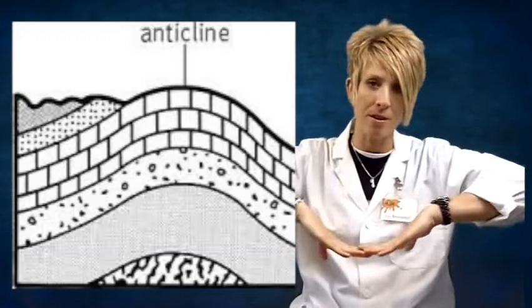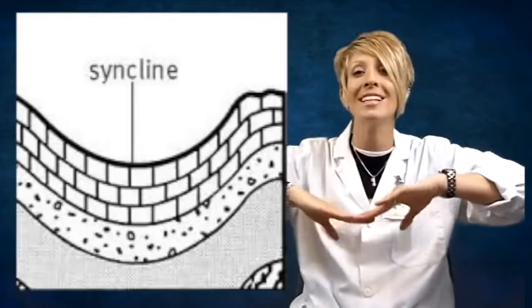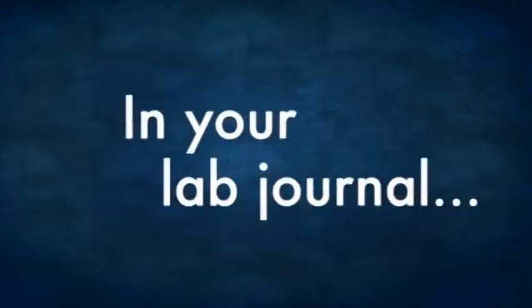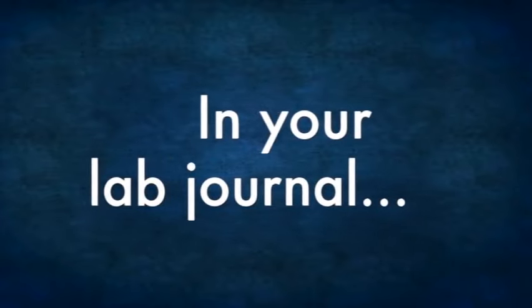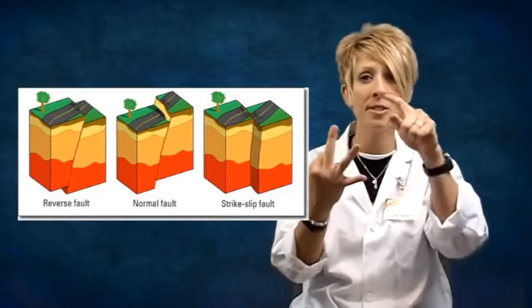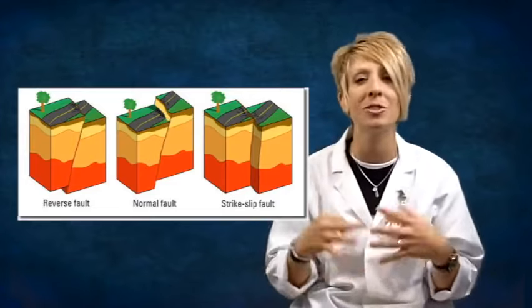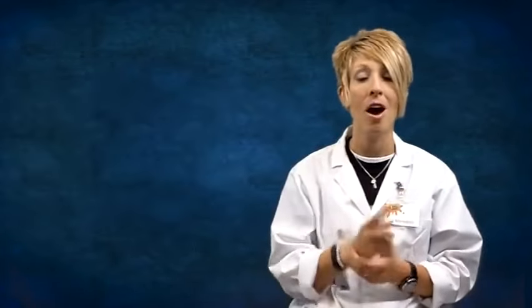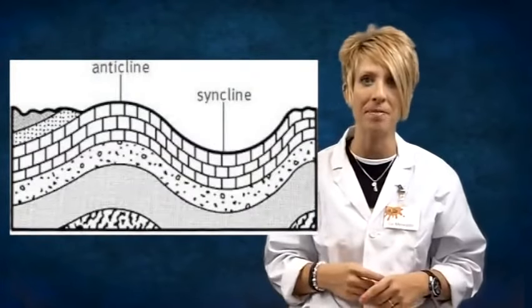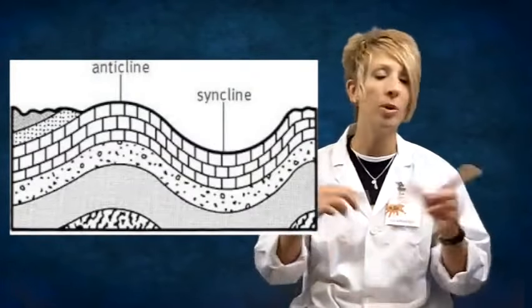Make sure in your lab journal you know the three types of faults, you know the force that causes each fault, and you know what happens as a result of those faults. Also make sure you know what anticline and syncline mean. Make sure you put that in your lab journal. Re-watch the video if you have to to get that down, and I'll see you guys in class.